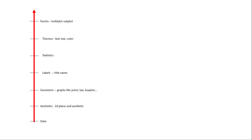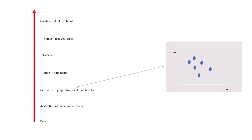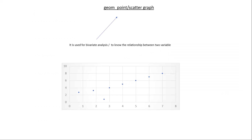This is the grammar of graphics, which is explained in my previous video. First, we give our data to the function, then we define aesthetics — the coordinate system, x-axis and y-axis. After that we define the geometric layer, which means graph type like point graph, bar graph, or box plot. Then we add labels like a title, and after that statistics, theme, and facet, which will be explained in my coming video.